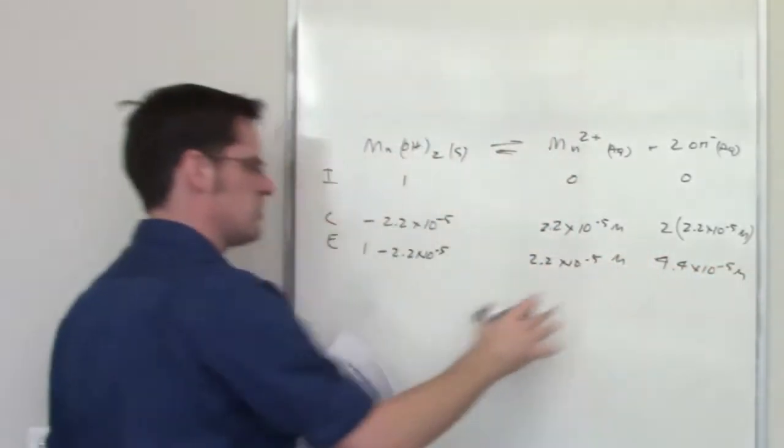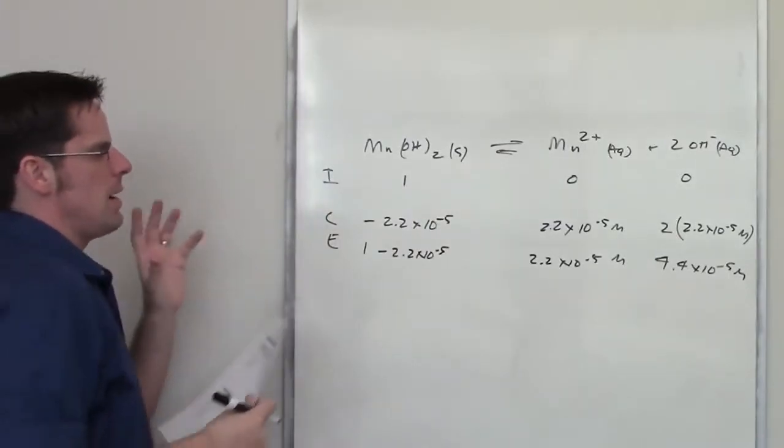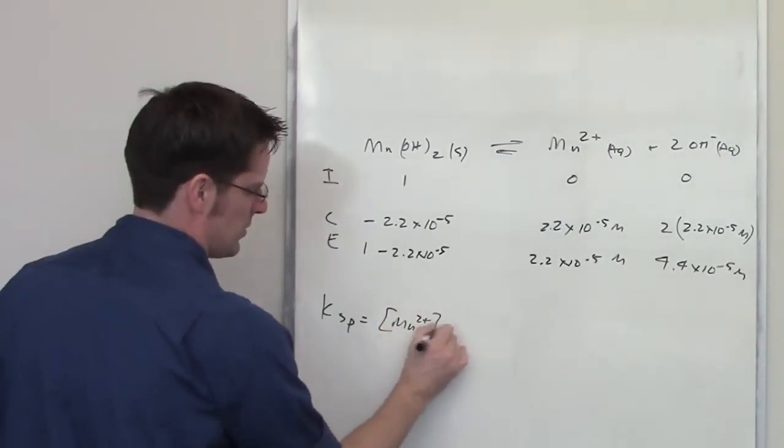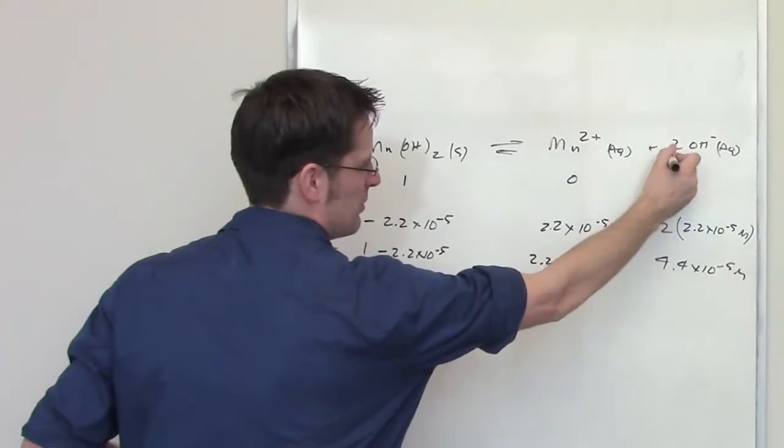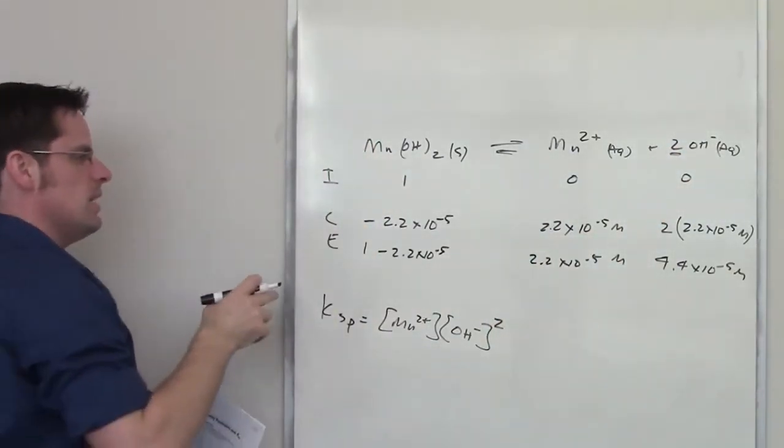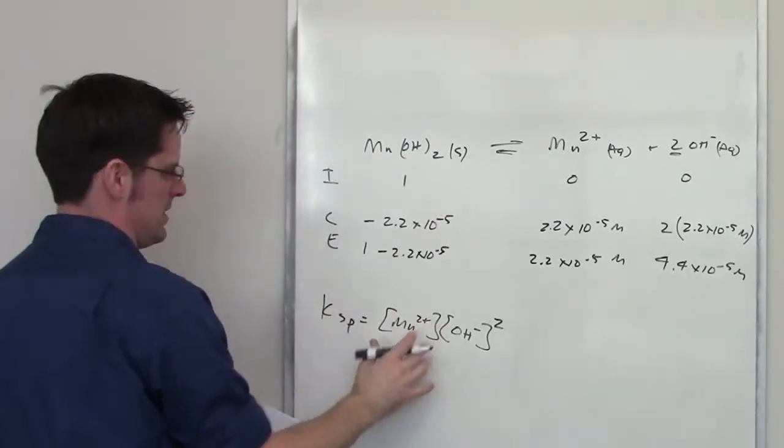These are the amounts for each of these things in equilibrium. Now, I'm going to write down my Ksp. My Ksp expression could be equal to the concentration of the ions on the right side of the equation. And of course, because I've got a 2 in front of the hydroxide, I have to square that in the Ksp expression. You'll notice once again that because this item is a solid, it does not appear in the Ksp anywhere.